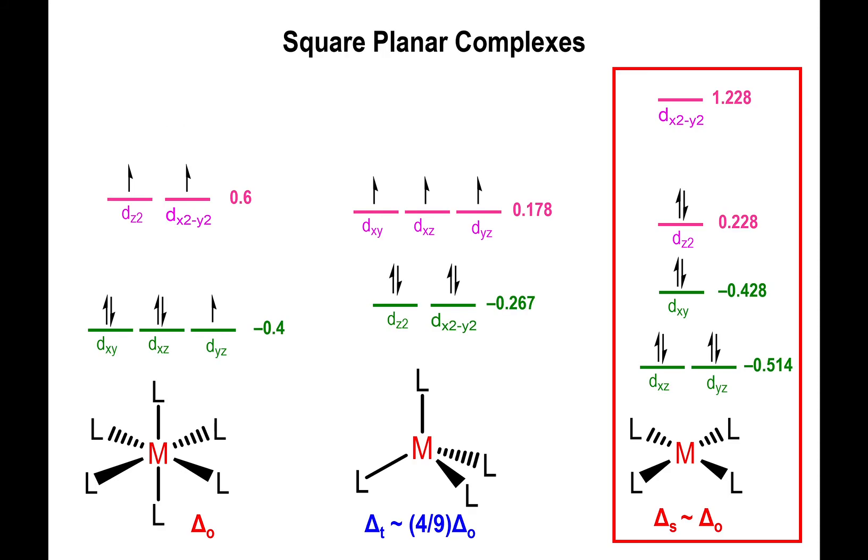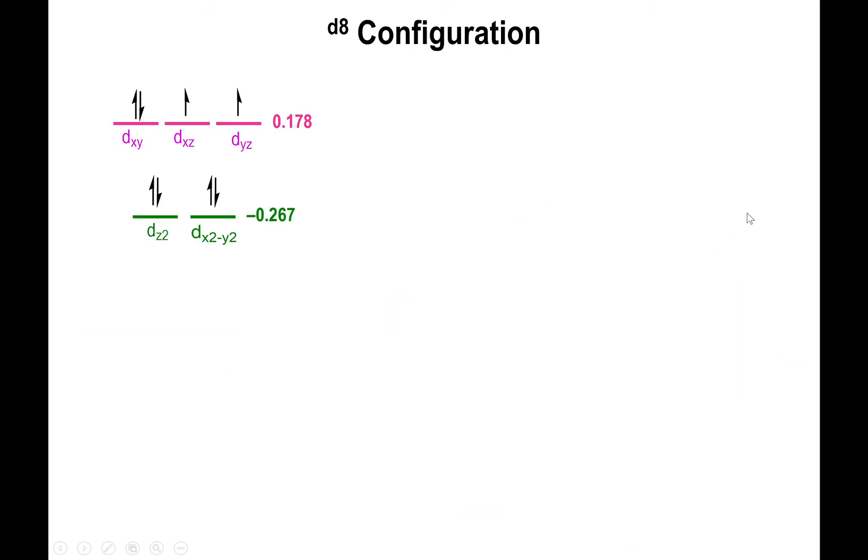Now square planar configurations. You could have a d8 configuration with 8 electrons. For the tetrahedral structure, I'm going with the high-spin configuration, although it doesn't really matter—you get the same configuration, four on the bottom and four on top. If you apply the energy values, the delta tetrahedral stabilization energy is negative 0.356 times delta octahedral.